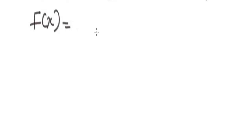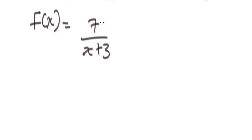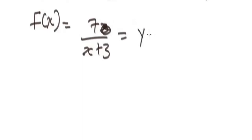Let's find the range of the rational function f(x) = 7 over (x + 3). Remember, when you have a rational function like this where you don't have a variable in the numerator — you just have only 7, no variable — the range of this function will be all real numbers except zero.